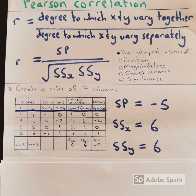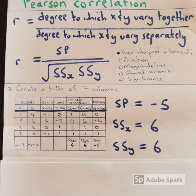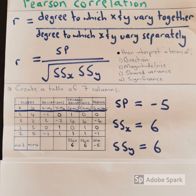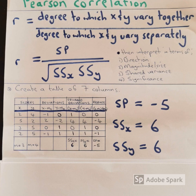You can see that the equation is SP divided by the square root of SSx times SSy. That is the degree to which x and y vary together, and at the bottom the degree to which x and y vary separately.